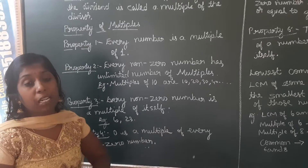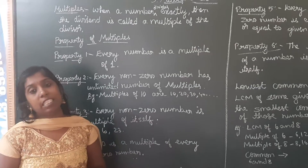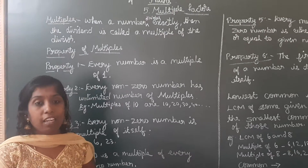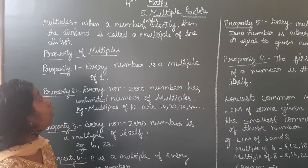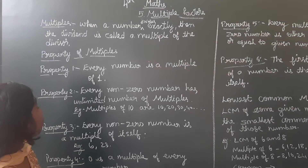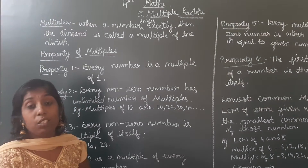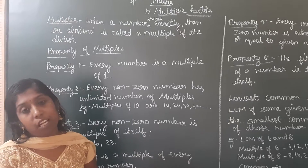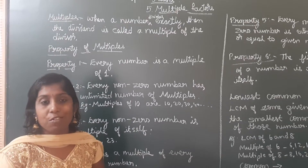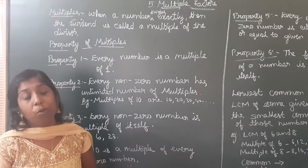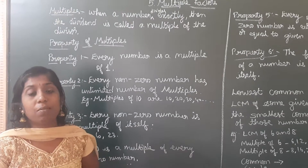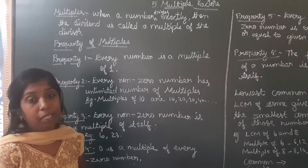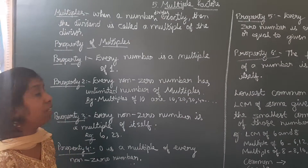What do you mean by multiples? When a number divides exactly, then it is called a multiple of the number. For example, 4 divides 8 — the remainder is 0, the number divides exactly. So that is called a multiple of that number.